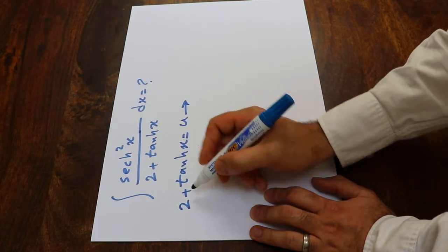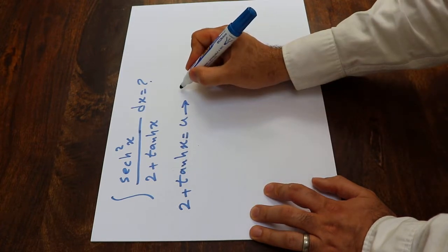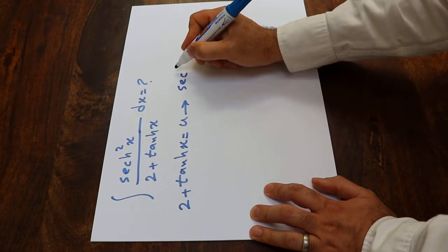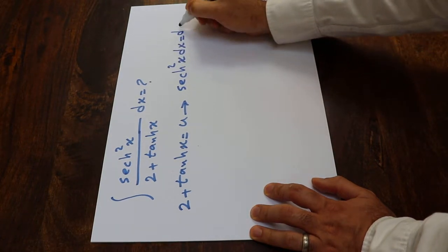you'll get the derivative of 2 is equal to 0. The derivative of hyperbolic tangent x will be equal to sech squared x dx, which will be equal to du.